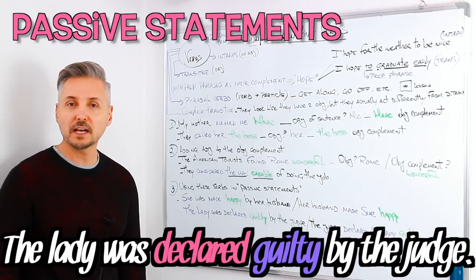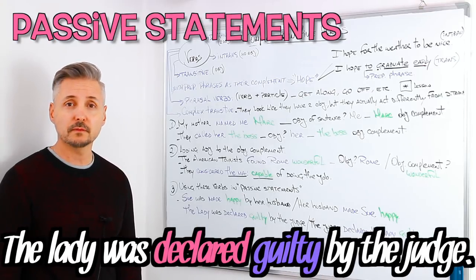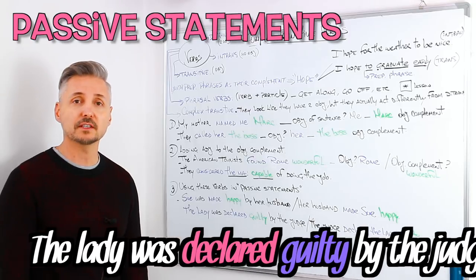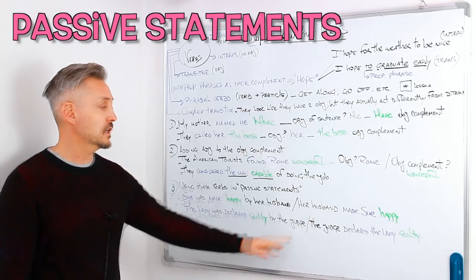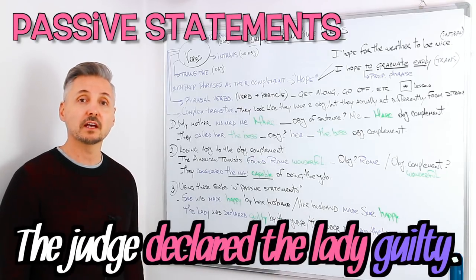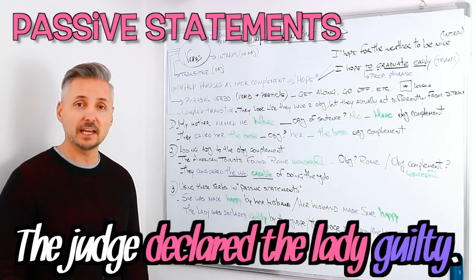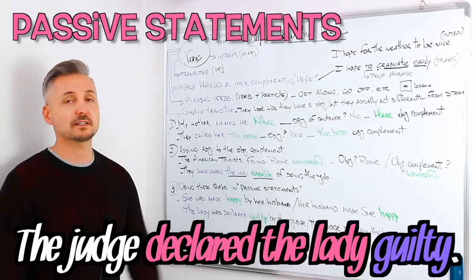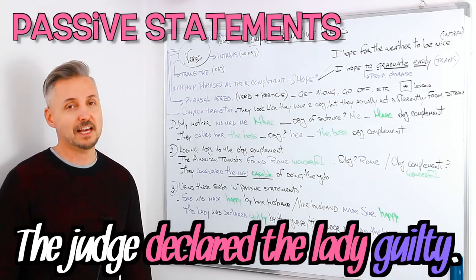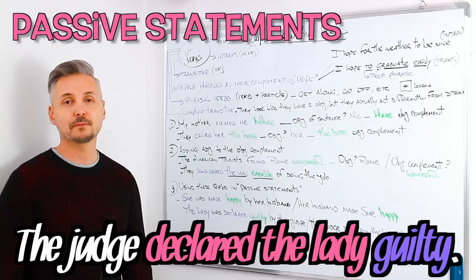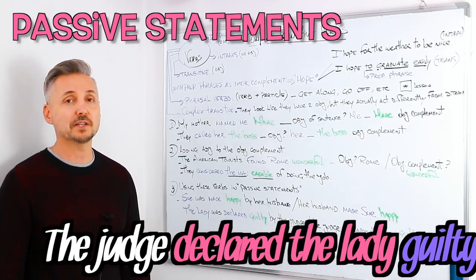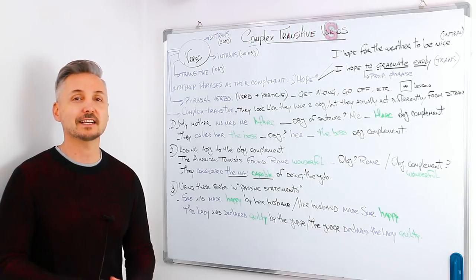The lady was declared guilty by the judge. If we wanted to make that into an active sentence: the judge declared the lady guilty. So what is the object? Yes, the lady. What about guilty? It's the object complement. Excellent.